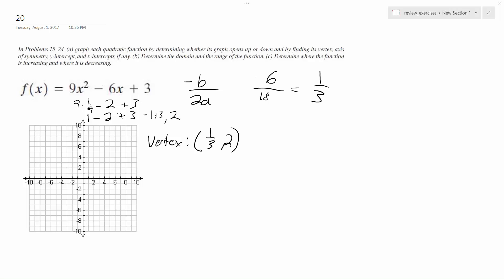And so the line of symmetry is x equals 1 third, and the y-intercept is going to be when x equals 0.